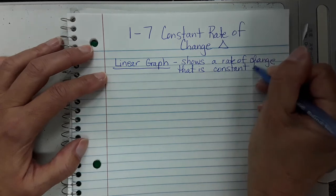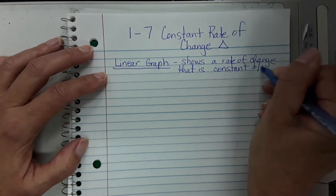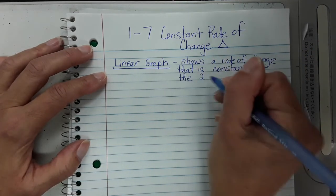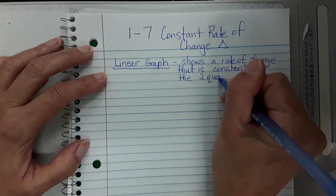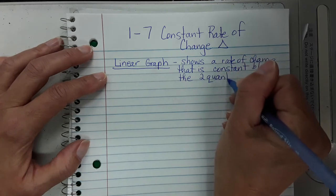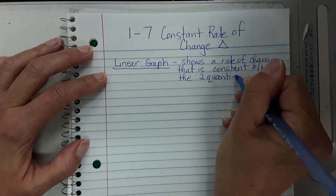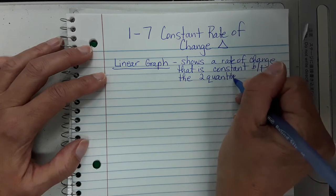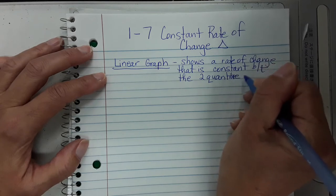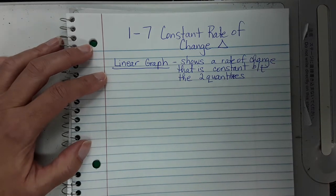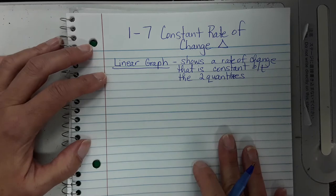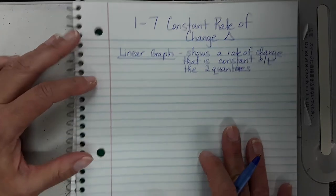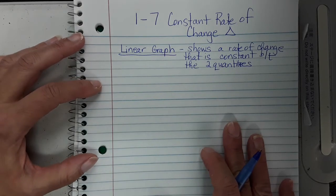The constant rate of change is between the two quantities — because we're always comparing two items, X and Y. It shows a rate of change that is constant between the two different quantities.